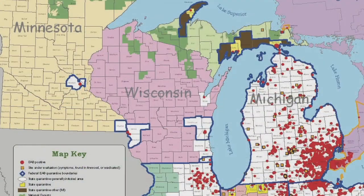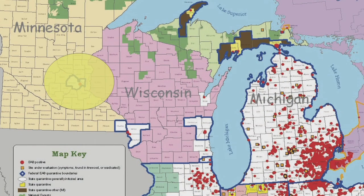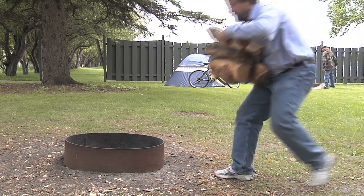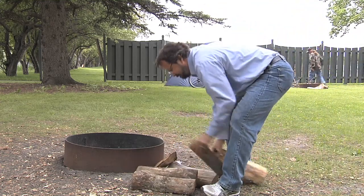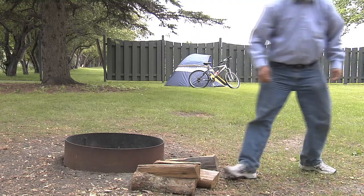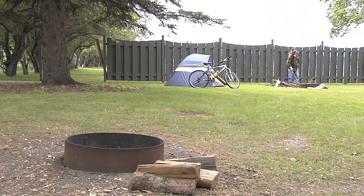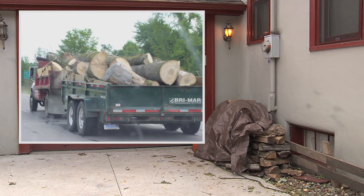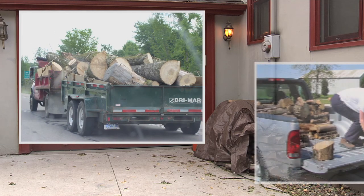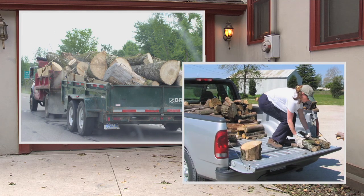In 2009, EAB was identified as close to North Dakota as Minneapolis and St. Paul. What can you do to help limit the spread of EAB? It's very simple — use local firewood. This goes for both campers as well as those who heat their homes with wood. Bringing in firewood from an outside area increases the risk of importing EAB and other harmful pests.